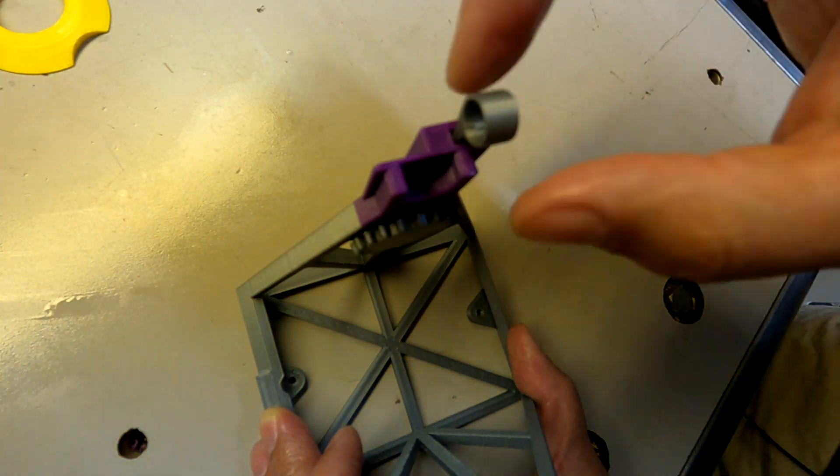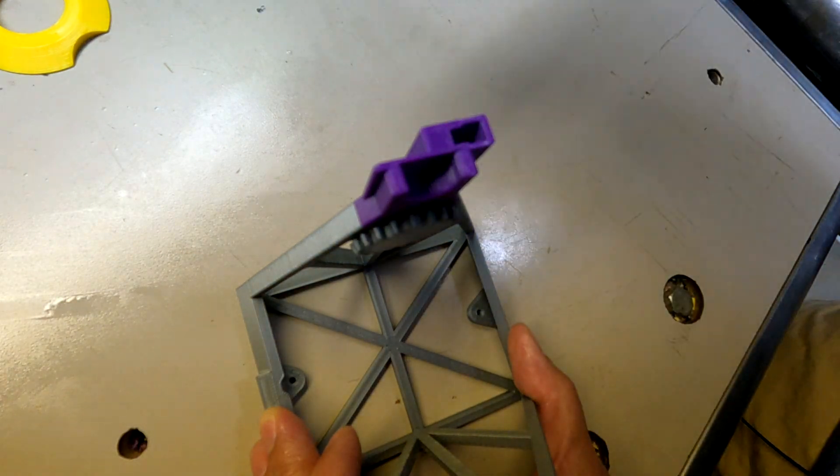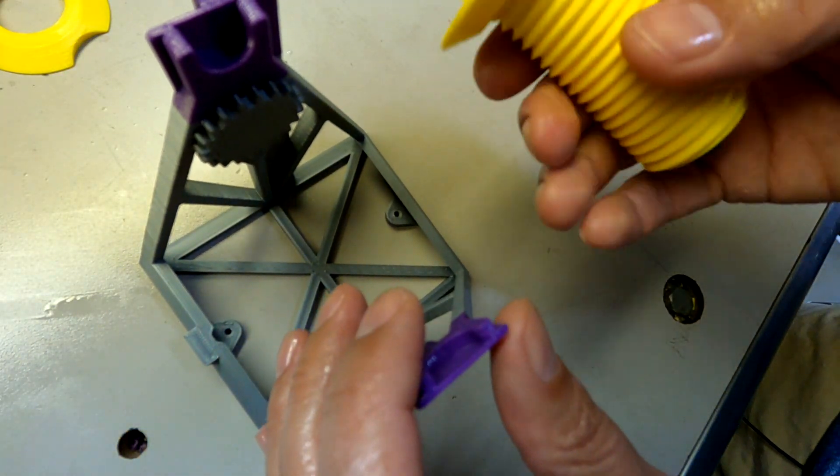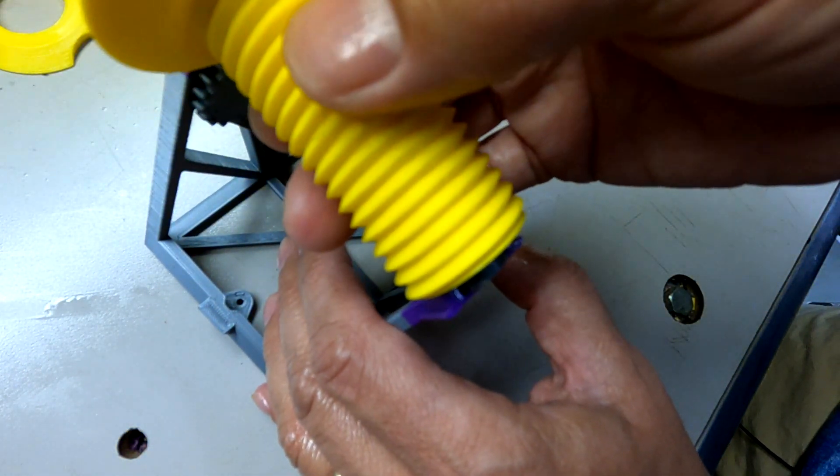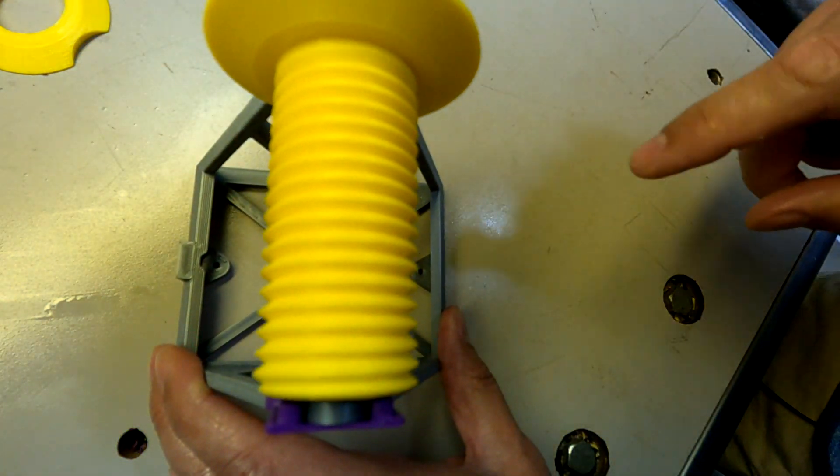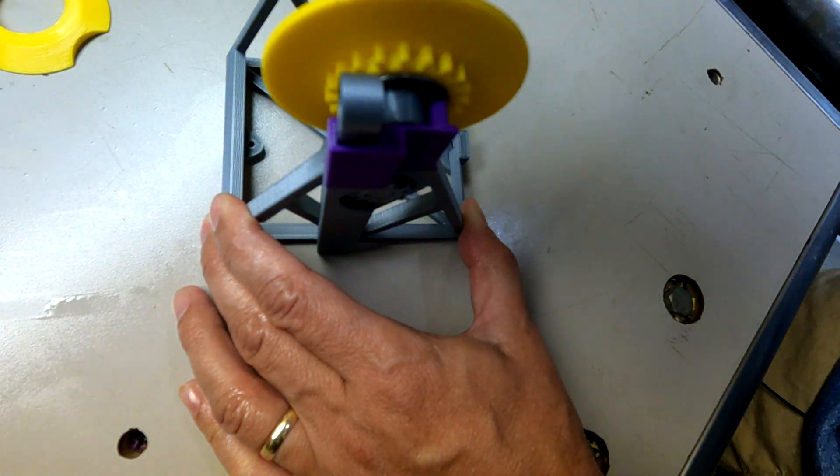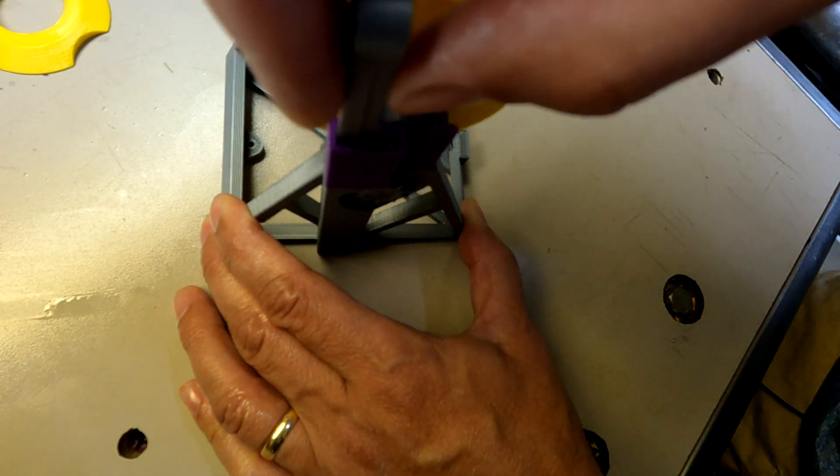There we go. So just the weight of this plastic part is enough to make this drop. And now we should be able to take our spindle and this will set right on here. And if we put that in, yeah.